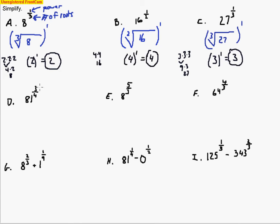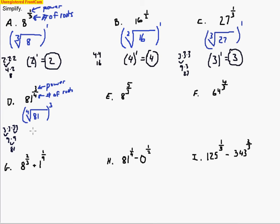The next one is a little different because now we have a power other than 1. We have the power on top — that's how many times we multiply our answer — and the denominator represents the number of roots. We need 4 numbers that multiply to make 81, then raise that to the third power. 81 is odd, so we try odd numbers. 3 times 3 times 3 times 3 — two 3s make 9, and 9 times 9 makes 81. So the root is 3, but we raise it to the third power: 3 times 3 times 3 gives us 27.